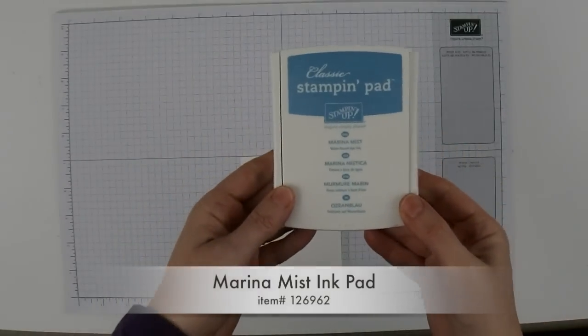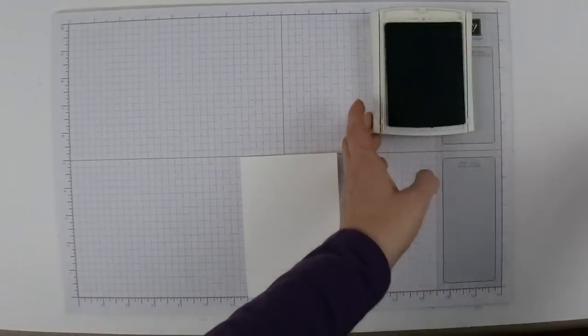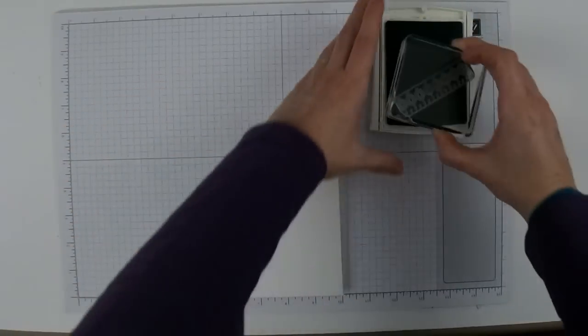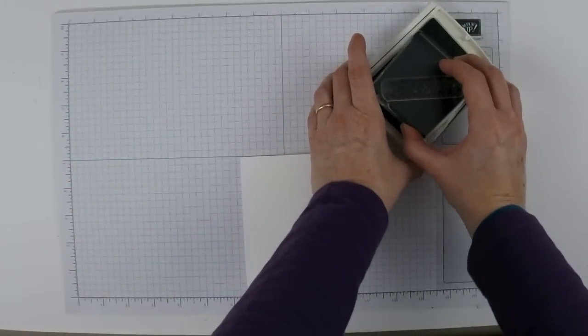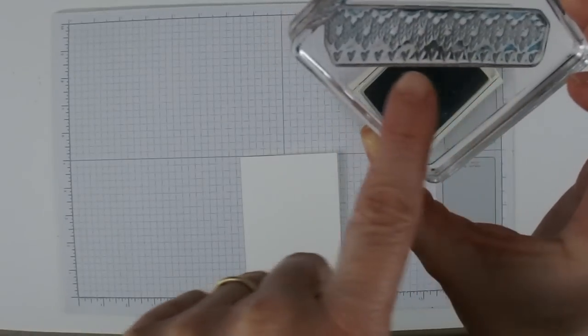Then I'm going to bring in my Marina Mist ink pad. This stamp has the stitching that looks like knitting on a sweater. So I'm just going to ink this up and have these little V's here come to the bottom.